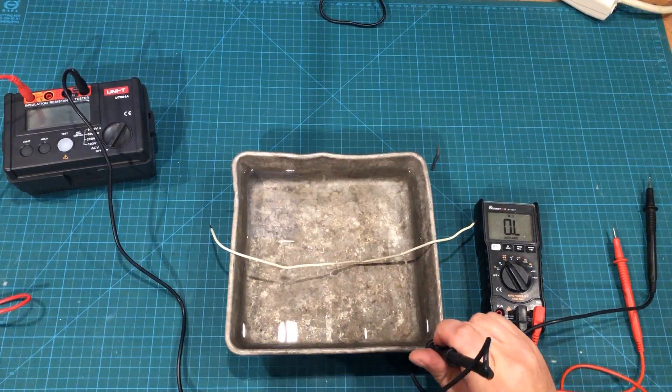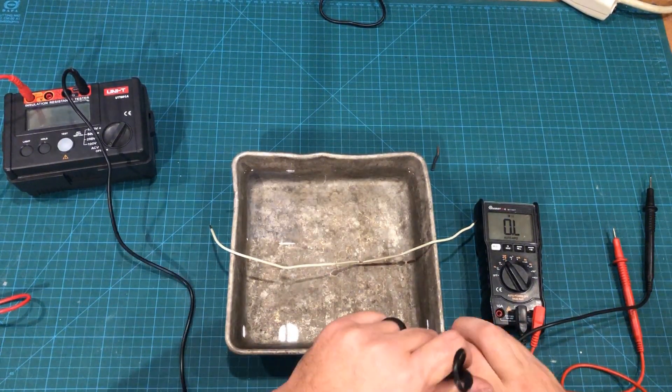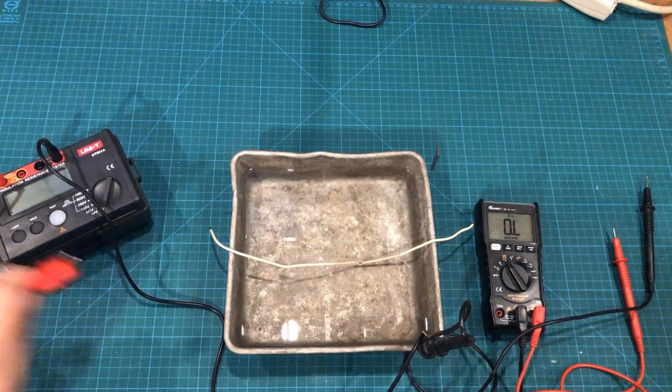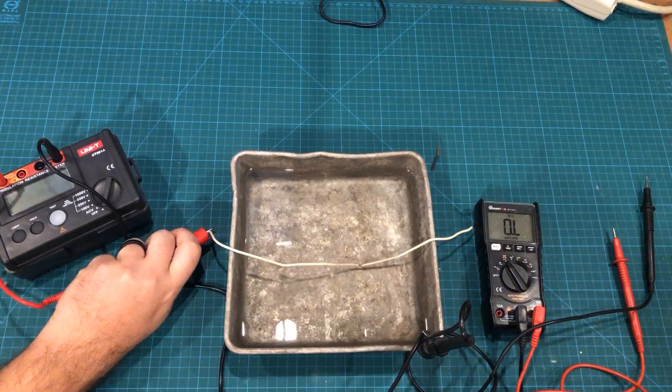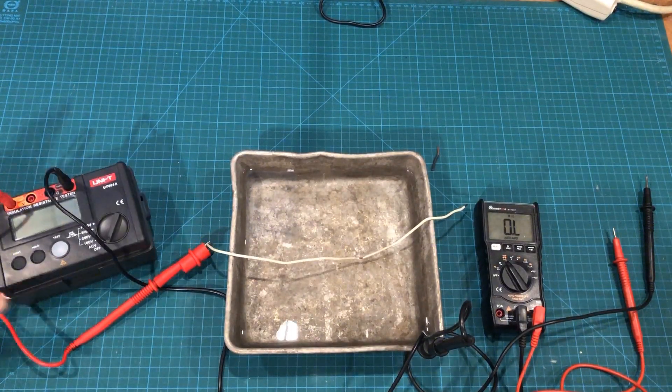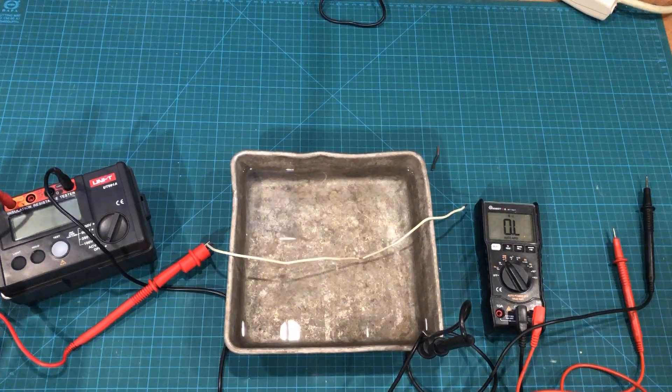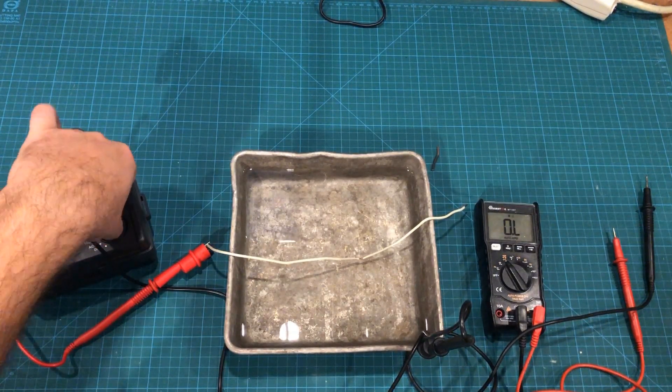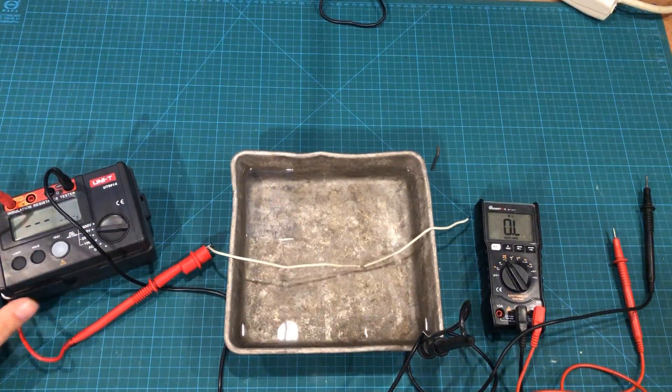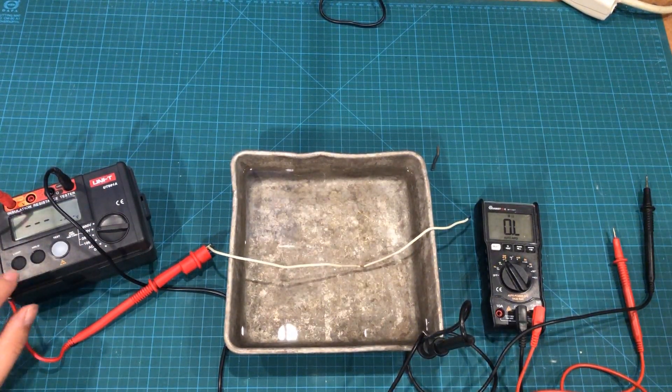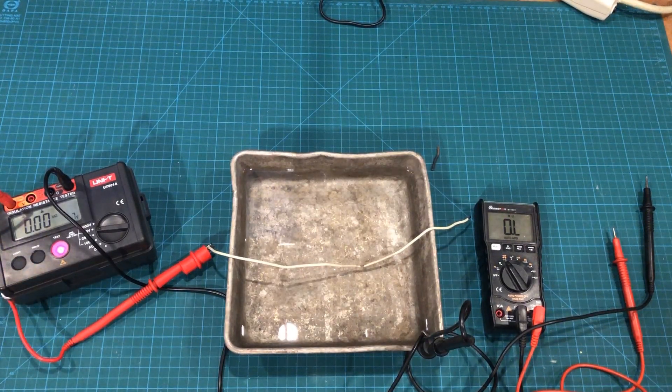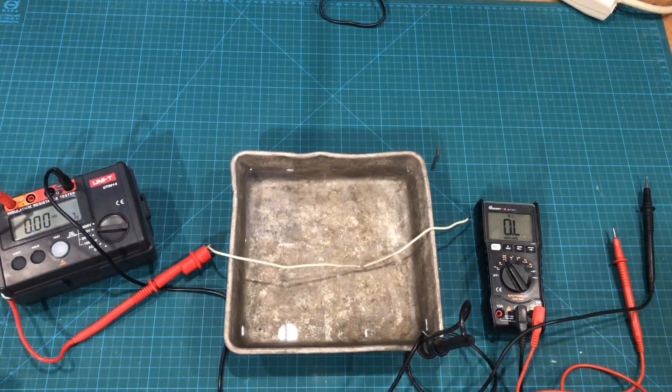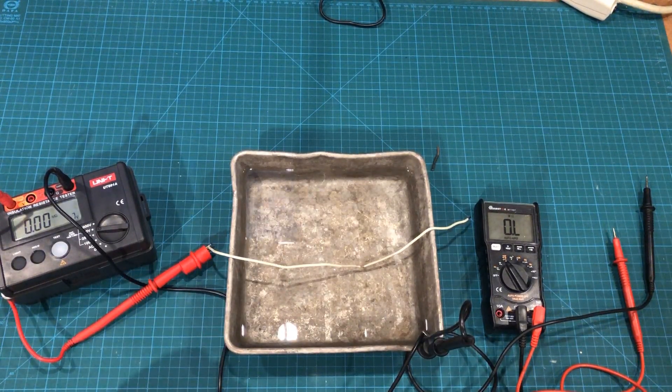But if we hook up the insulation resistance tester by putting one connection on the piece of conduit and the other on your wire, you'll see that as we bring this up - this wire is a solid centimeter off the bottom of the pipe, so there's no physical connection between them. But if I bring this up to 500 volts, which is standard for residential voltage testing, and we push the button, you can see this thing is freaking out. We have a connection between the conduit and the wire.